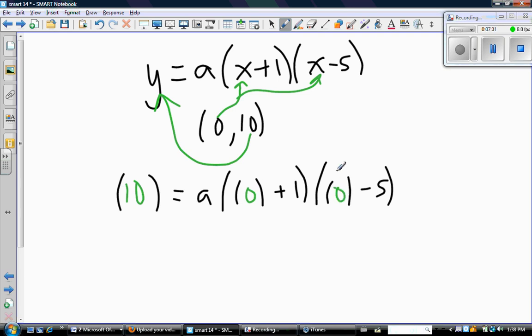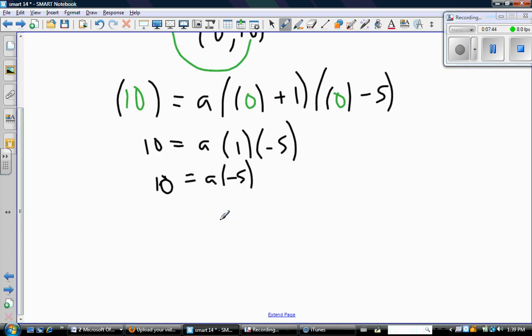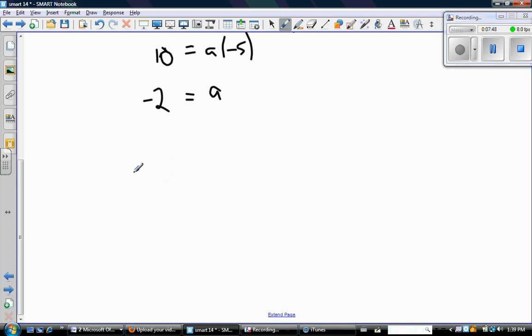We're going to do a substitution for x and for y, and that'll allow us to solve for a. Okay, so again, y was 10, x was 0, so there we go. Do the math, so 10 equals a times 1 times -5. So 10 equals a times -5. Divide both sides by -5, and you get a equals -2. So now I have everything I need. Here is the equation of that quadratic in fully factored form. Okay, there's my answer for b.